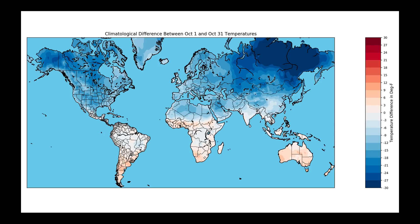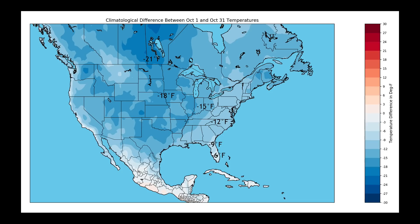As we begin a new month, I thought it'd be fun to look at the climatological difference between temperatures on October 1st versus October 31st for the globe. The map shows that difference. You can clearly see the division between the northern and southern hemispheres — the southern hemisphere warming by several degrees as they begin their spring, while the northern hemisphere plummets through fall. Temperature changes across North America are quite dramatic, typically dropping 12 to 20 degrees across the United States and Canadian prairies by month's end.